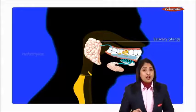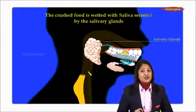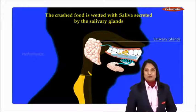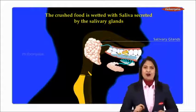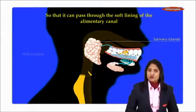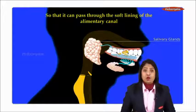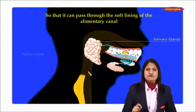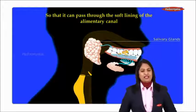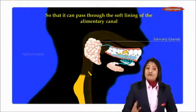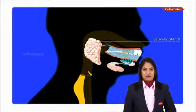When the teeth are chewing the food, the salivary glands are stimulated and they secrete saliva into the mouth. The crushed food is wetted with saliva and is converted into a soft mass that can pass easily through the soft lining of the alimentary canal without damaging it.